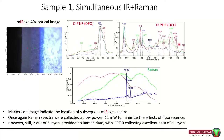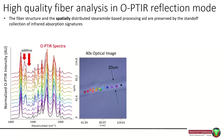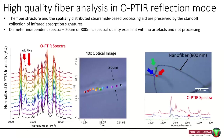Fibres are an interesting example because they're actually quite difficult with traditional IR and QCL measurements. Here we've been able to collect high-quality spectra without any data processing — these are raw spectra. Along the length of a fibre, we can see that additives are changing. Whether it's a 20-micron fibre or an 800-nanometer fibre, the spectra still look interpretable and recognisable.